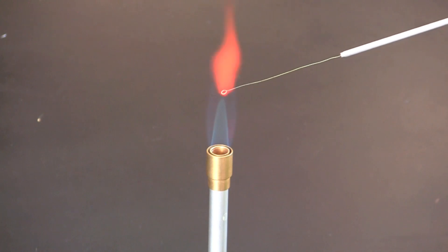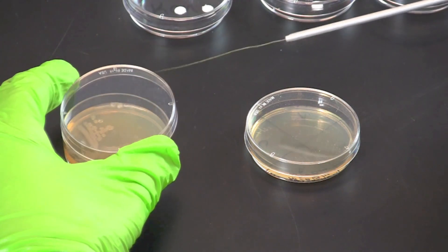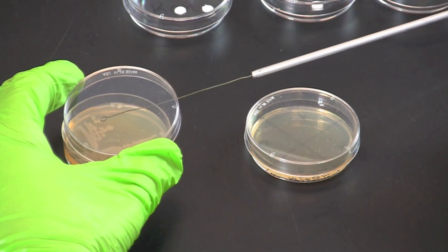Flame an inoculating loop to sterilize and let it cool. You can lightly touch the loop on an empty spot on the bacterial plate to make certain the loop is cool.